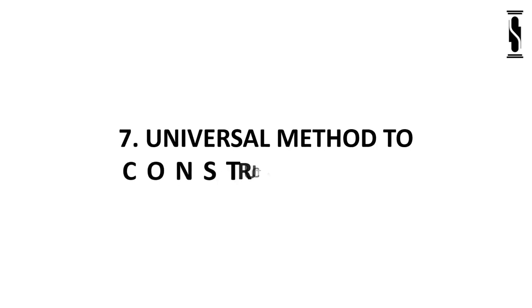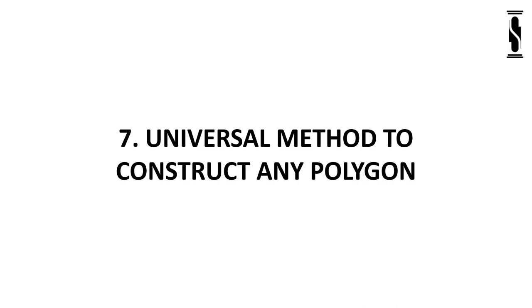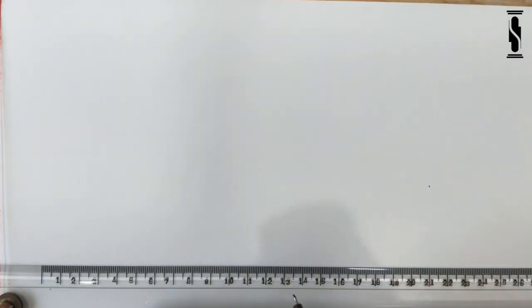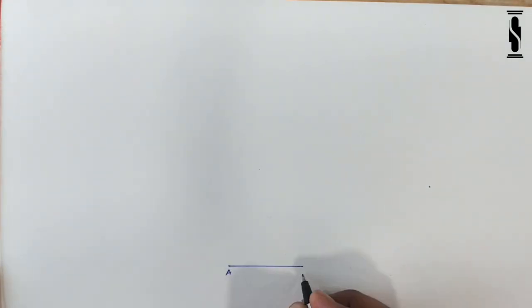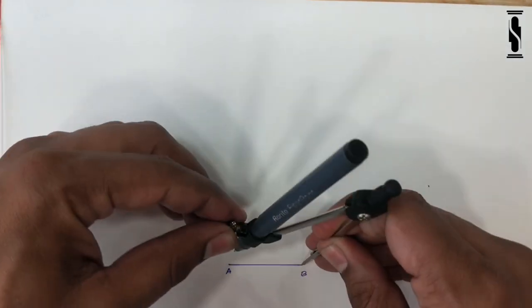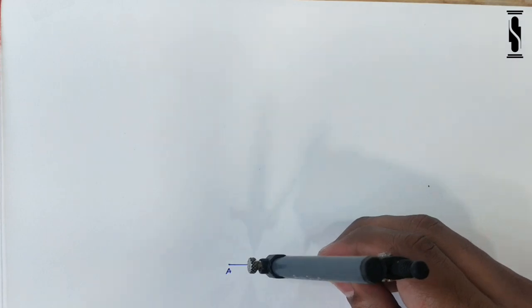Universal method to construct any polygon. Draw line AB according to given length, and bisect it.